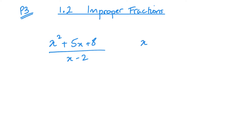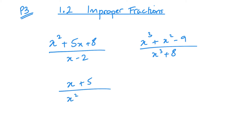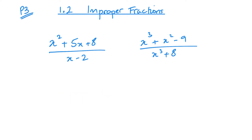Similarly, x cubed plus x squared minus 9 over x cubed plus 8 — the largest power on the bottom is cubed and the largest power on the top is also cubed, so this is again improper. It's only when the powers are the other way around that it's not improper — if the largest power on top is smaller than the largest power on the bottom, then it's not improper. It's all about comparing those largest powers.